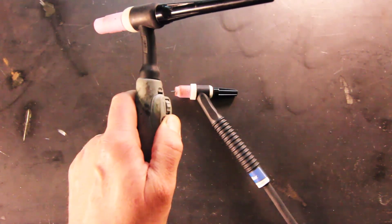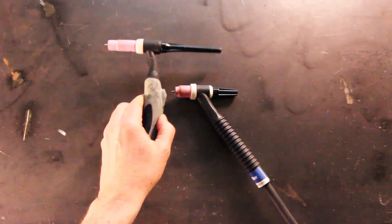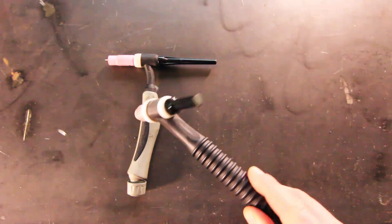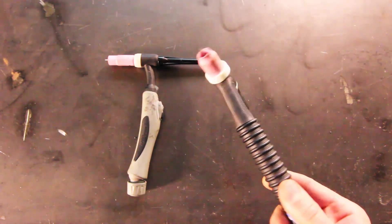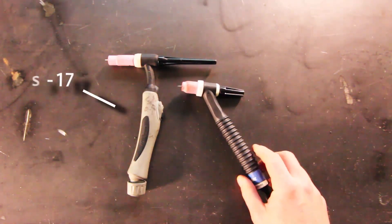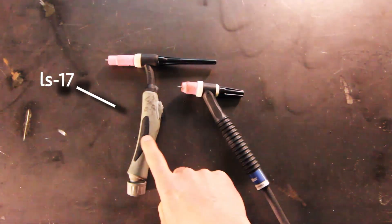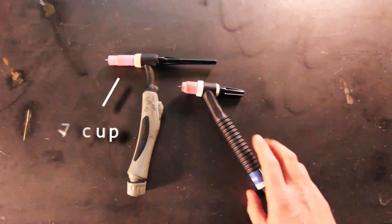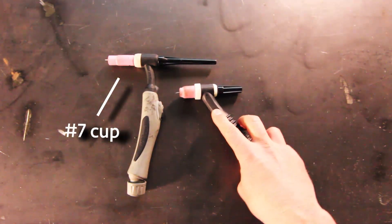When it comes to TIG torch setups, you can see that both of these are similar but they have different sizes for their cups and different lengths for their back caps. The LS-17 here has a standard torch setup with a number seven cup on it.